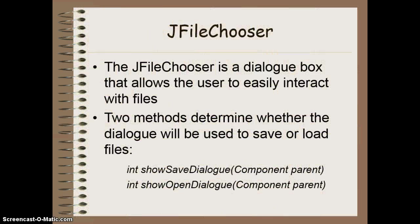The JFileChooser class is basically a class that's used to make a dialog box either for saving or loading files into a program. It's very user friendly and looks like the typical dialog box you see in most programs, where you have a window at the top that allows you to access the files, a text box at the bottom where you can type in a file name, a save or load button, and a cancel button. Whether you want to save or load a file, you're going to use a different method from this class.